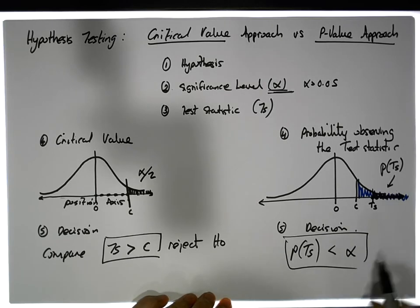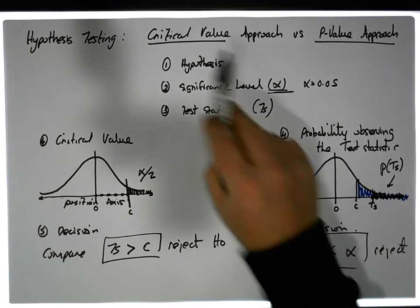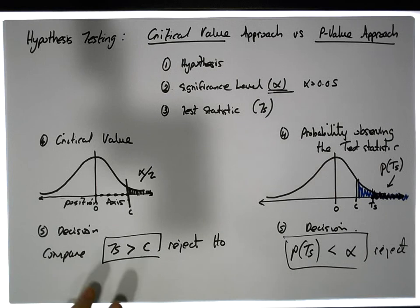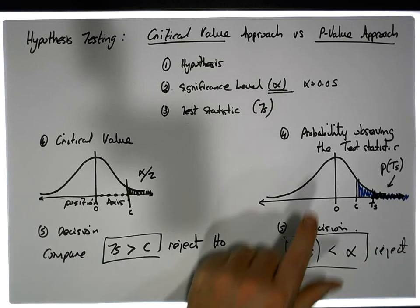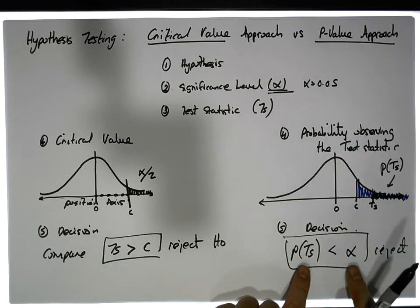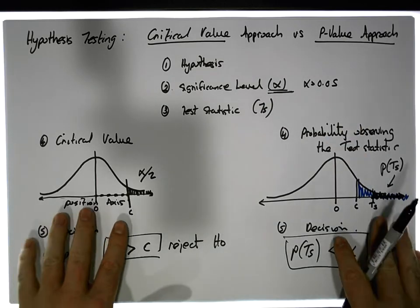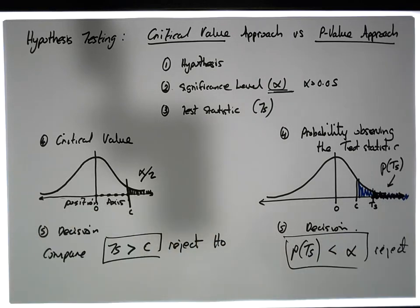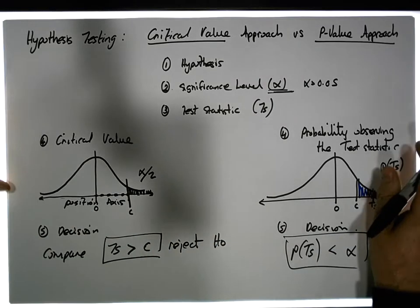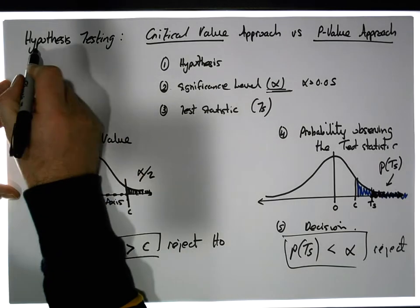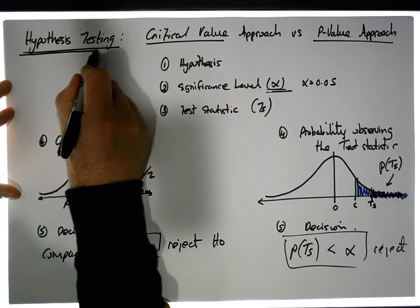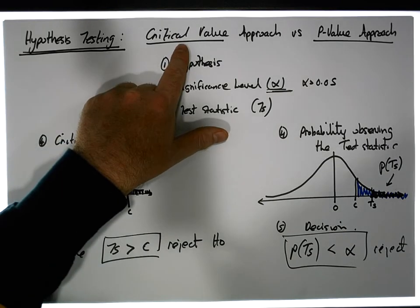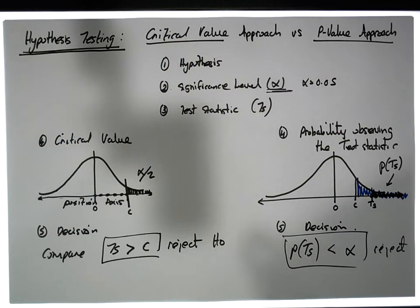There's a subtle difference between the two approaches: the critical value approach compares points along the horizontal axis, while the p-value approach compares two areas under the curve, but they effectively give you the same answer. This is Jonathan Lambert with the Mathematics Development and Support Service at the National College of Ireland. I hope this video on hypothesis testing and the difference between the critical value approach and the p-value approach was intuitive and helpful. Thanks for watching.